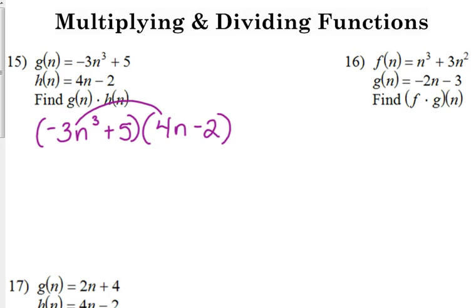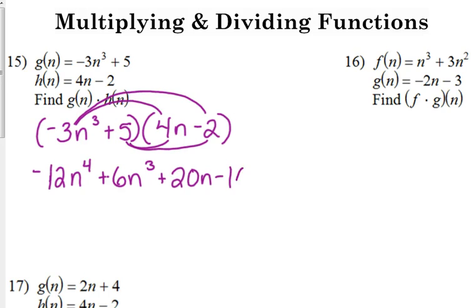Negative 3n cubed times 4n is negative 12n to the 4th. The outside, negative 3n cubed times negative 2 is positive 6n cubed. The inside, 5 times 4n is 20n. And the last is minus 10. Don't have any like terms - n to the 4th, n cubed, n, and a constant. That's as far as we can go with that.